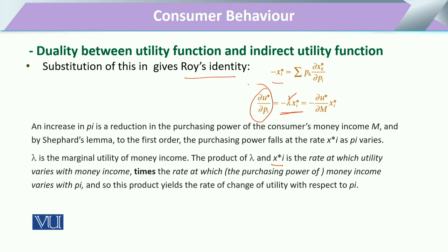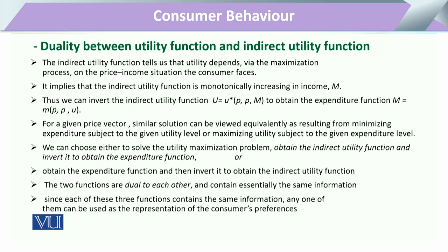It is times the rate at which the purchasing power of money income varies with pi, and so the product yields the rate of change of utility with respect to pi. We have substituted both conditions of utility maximization through the direct function and at the same time with the indirect function, and we can have the same assumption on both sides to reach the same point. That same point tells us that utility, either via the maximization process or via the price and the income, leads to the same result.